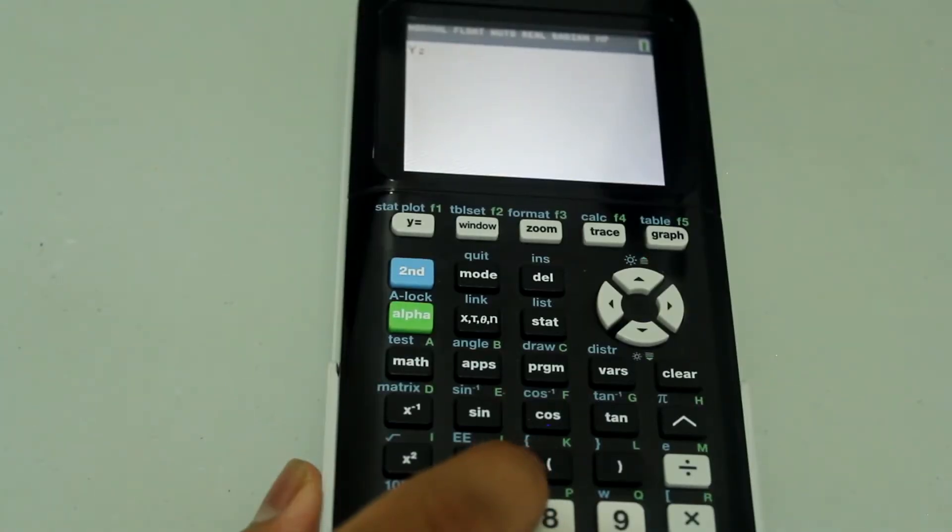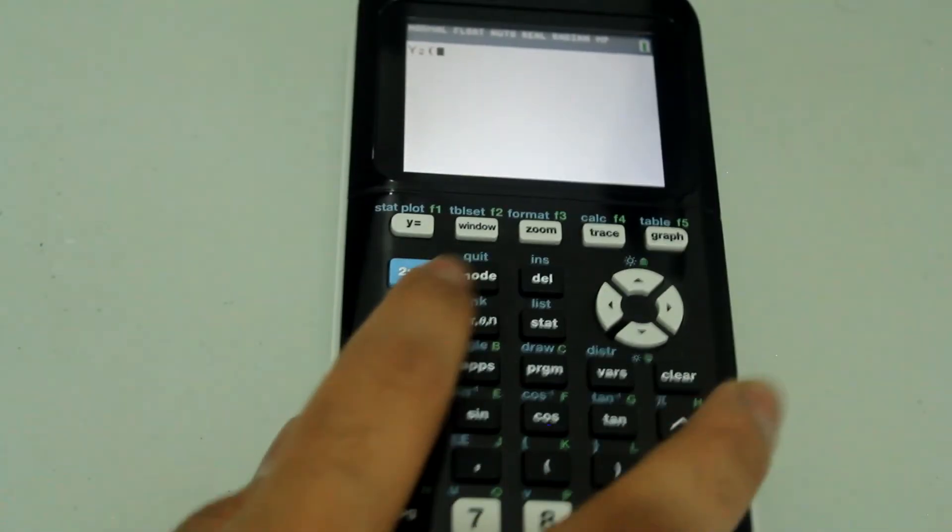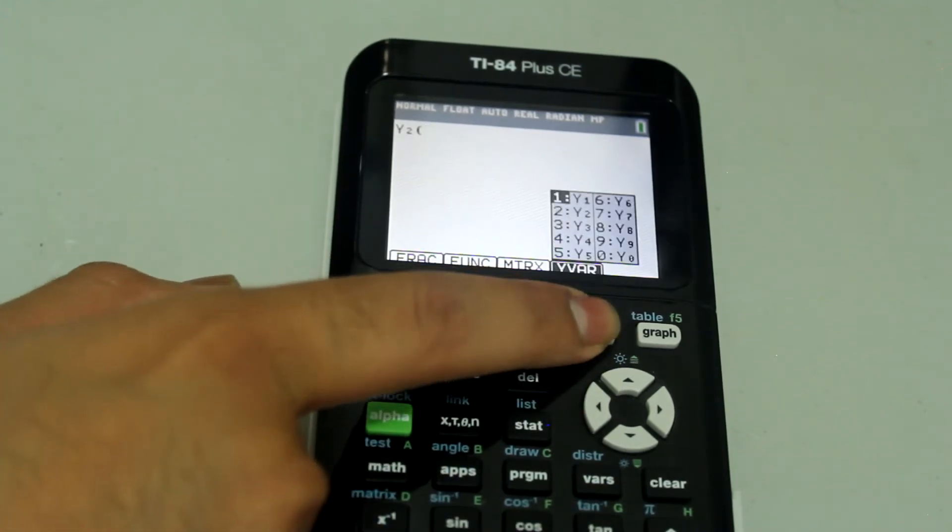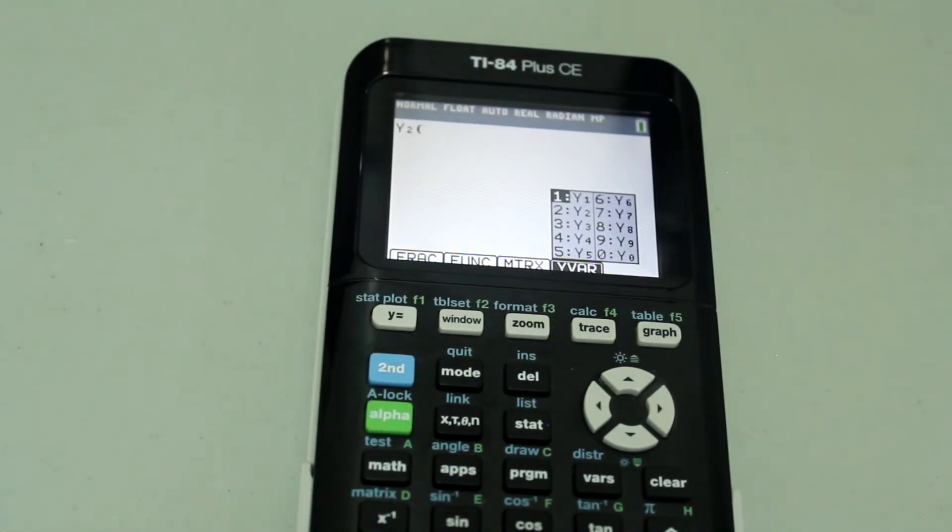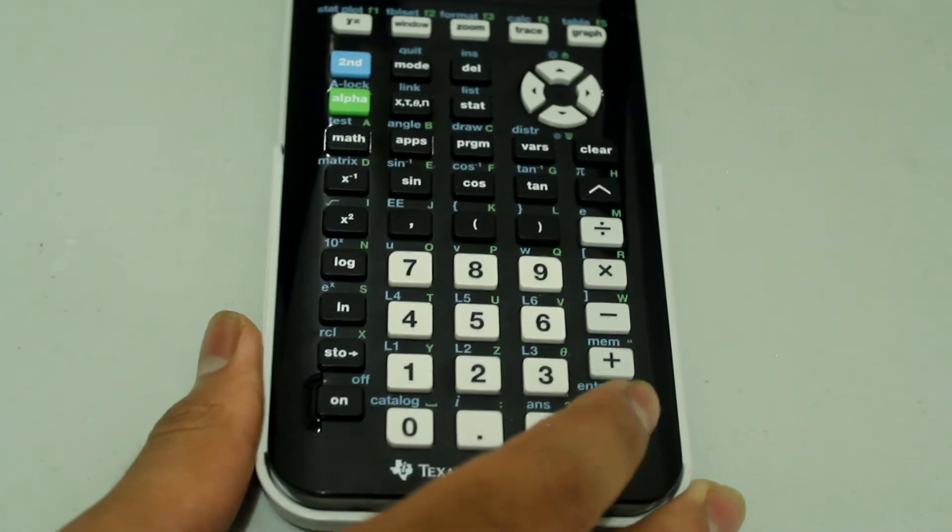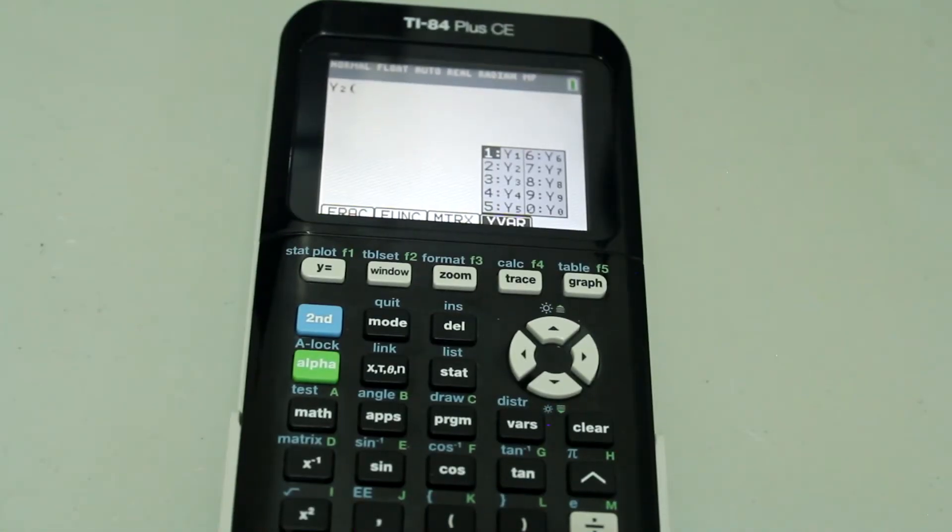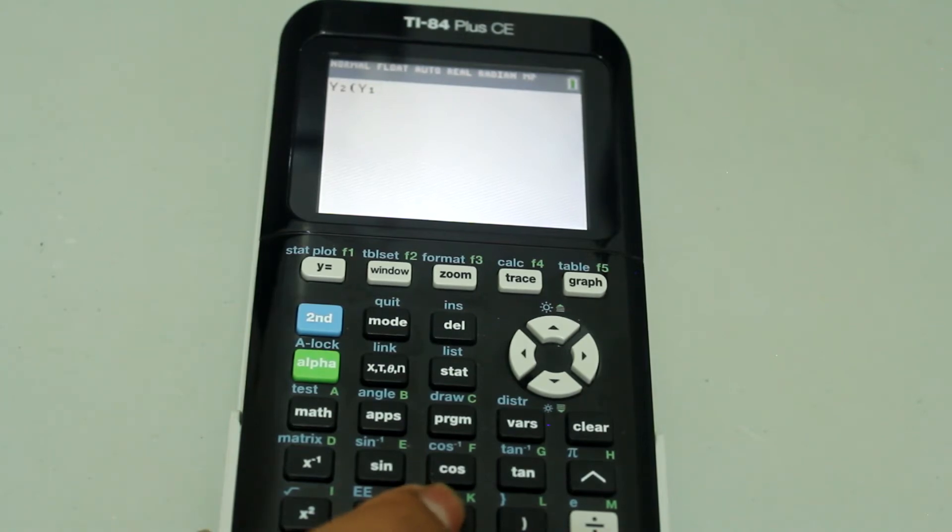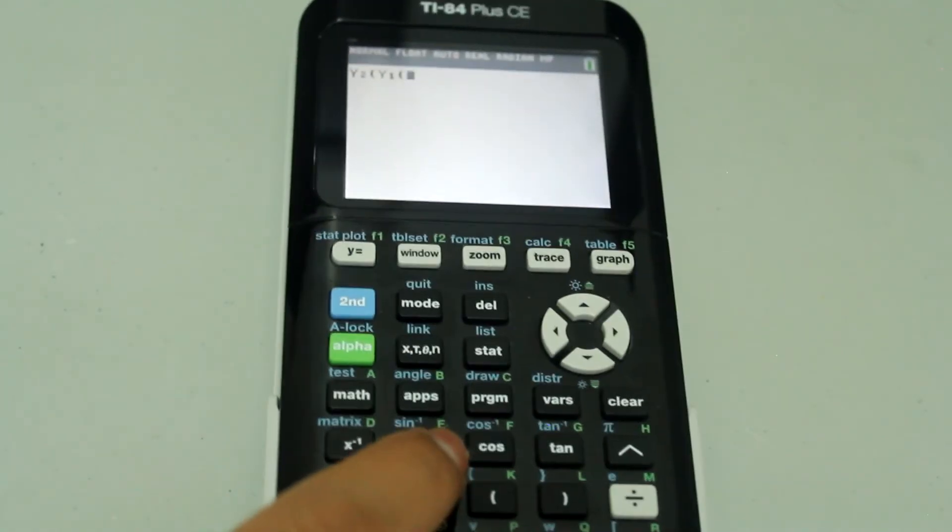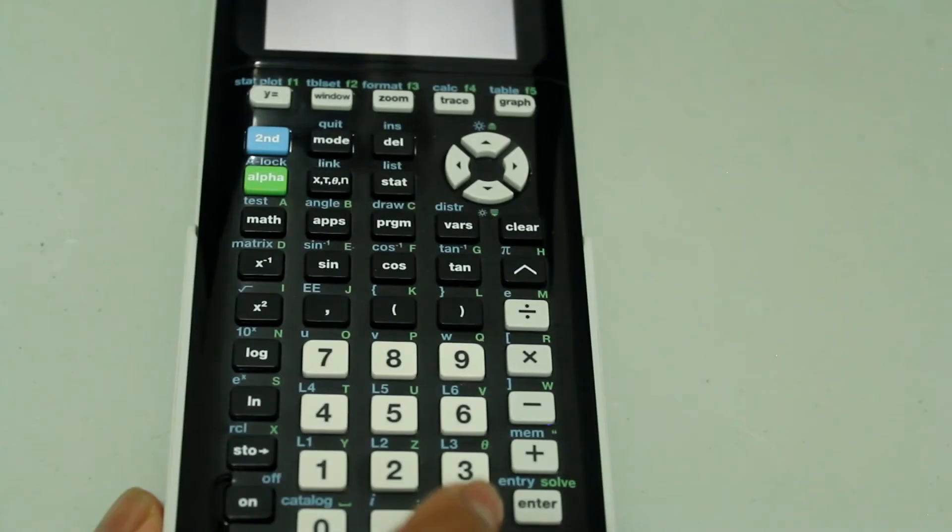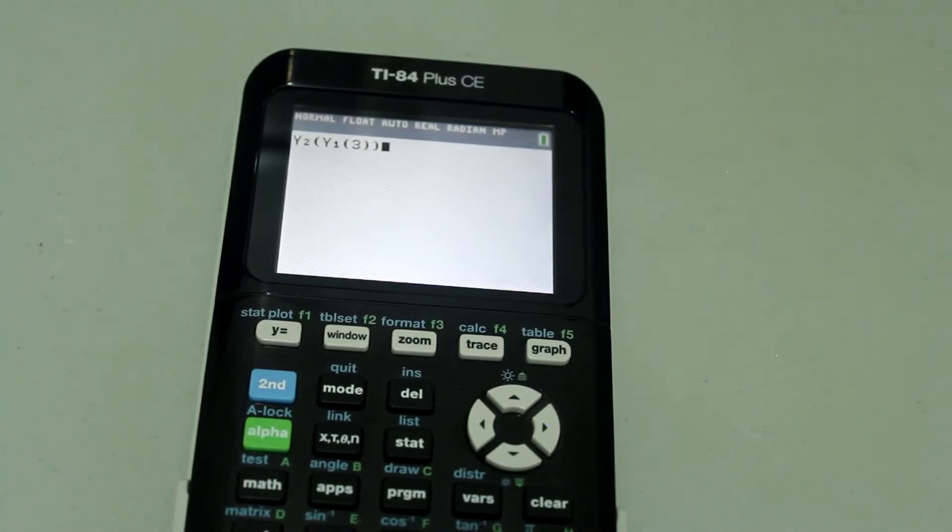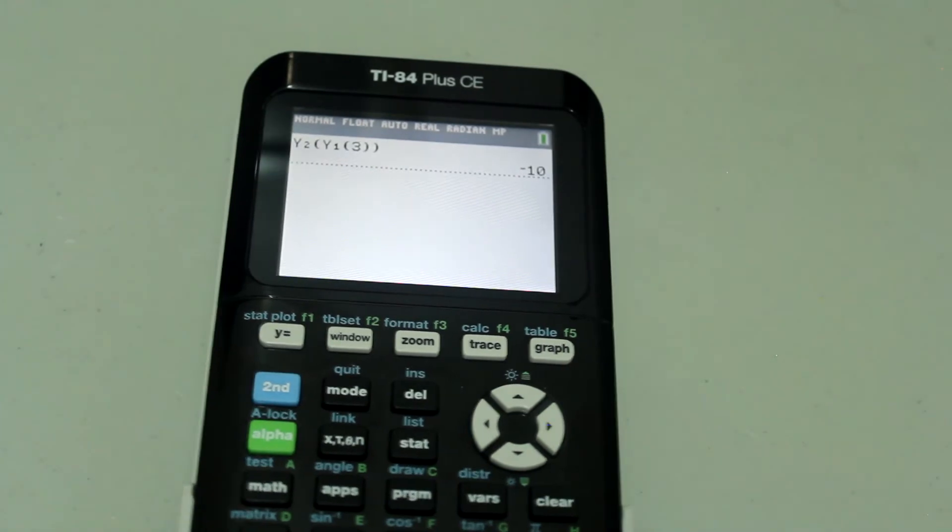Next, open parenthesis. Once again, press ALPHA and the TRACE button. This time we're just going to hit ENTER because Y1 is already selected. Then open another parenthesis and type in 3, and then close both parentheses. And there we have it.